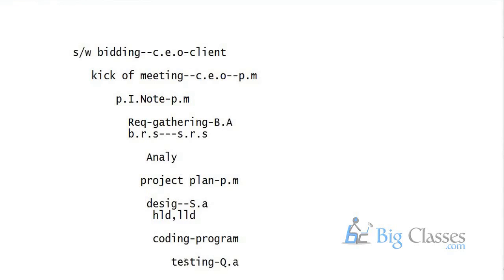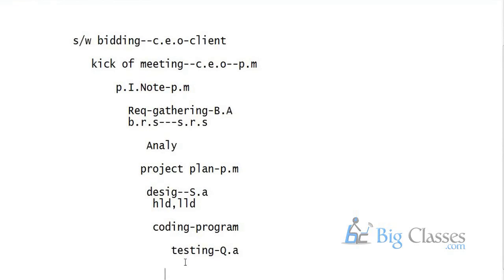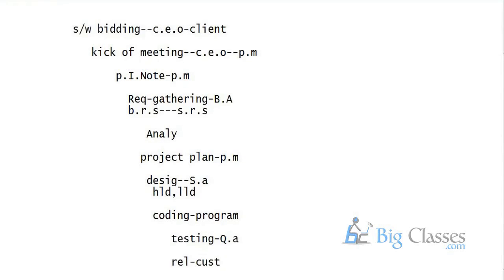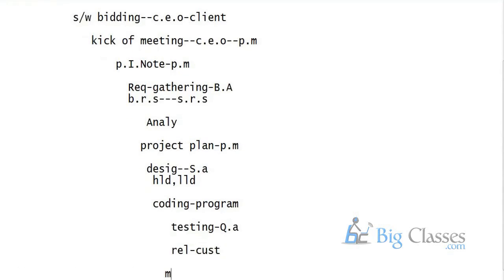At the testing stage, we need to compare the expected value and the actual value. Once testing is completed, the application is released to the customer. After release, the CCB team concentrates on maintenance, also called support. For example, if you purchase a mobile and it's not working, there's a warranty and guarantee — that's support. Support is given by the CCB, the Change Control Board team.